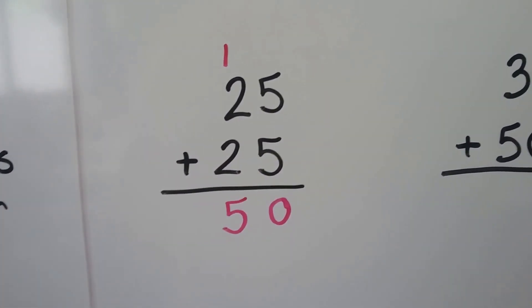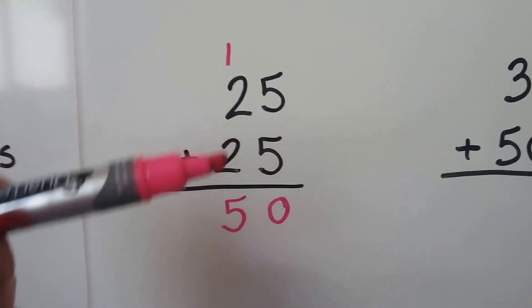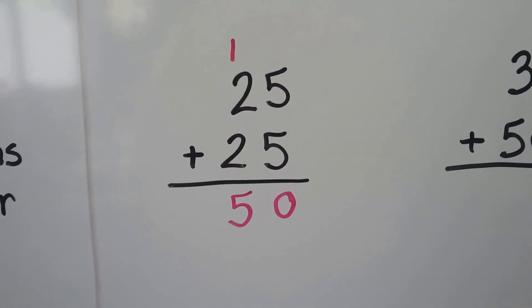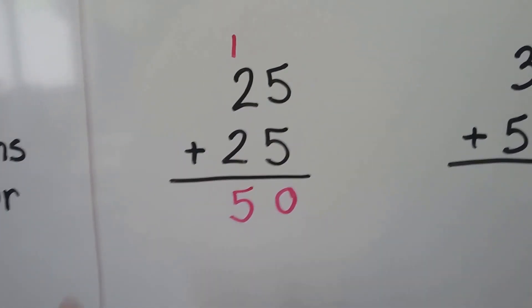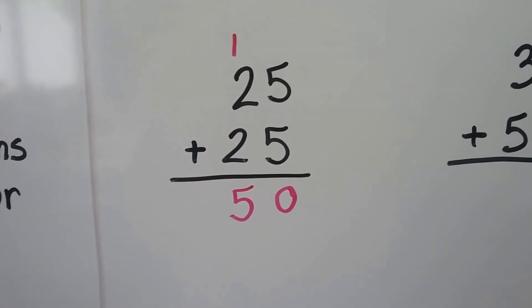See? Counting by 25s: 25, 50. 25 plus 25 is 50, just like 2 quarters is 50 cents, right?